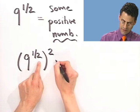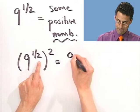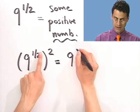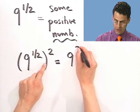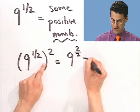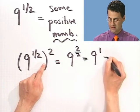So if I were to multiply those together, I would see 9, and I would see 1 half times 2, which is 2 over 2, which equals 9 to the 1, which is a fancy way of saying 9.